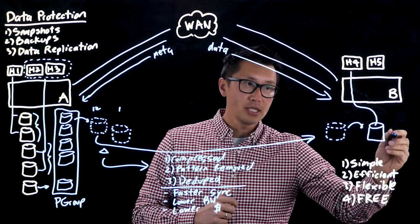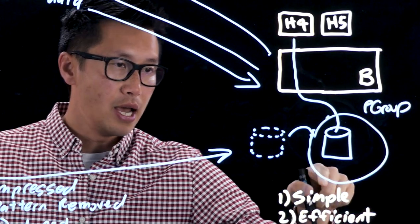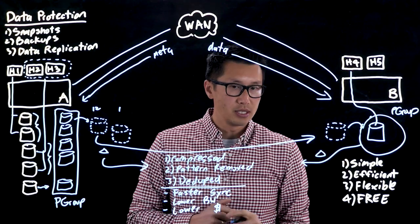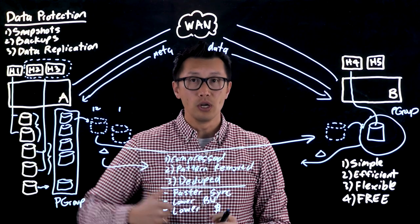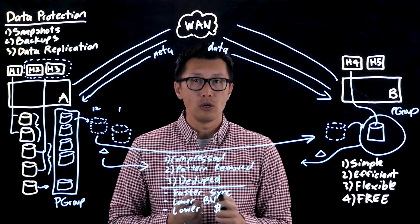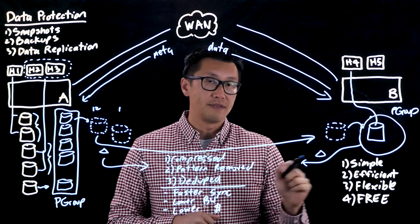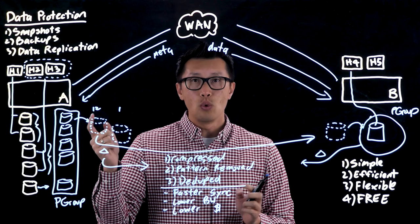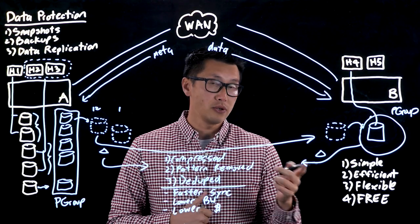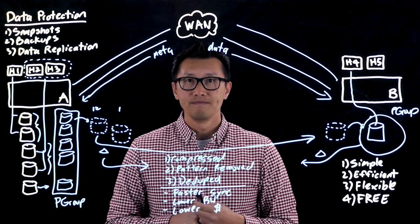When site A comes back up and they want to send data back, it's simple — just like before, the volume is put into a protection group and only the delta data written from the host is sent back over to resync the original volumes. This whole process is very straightforward and built within the Pure Storage arrays — no extra hardware, no extra software. It's efficient thanks to Pure's data reduction technology, and it's flexible with multiple topologies and modes, including synchronous replication with active cluster. And lastly, it is free. So go ahead and protect your data. Thanks for watching.